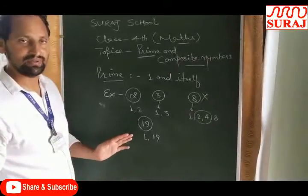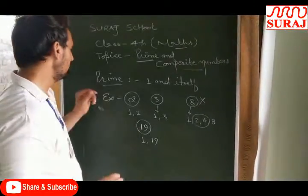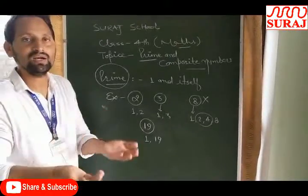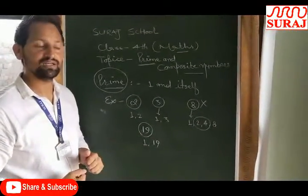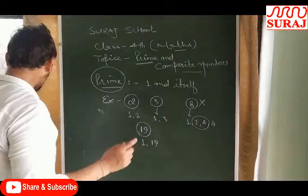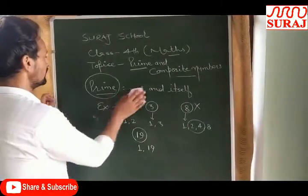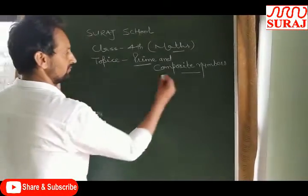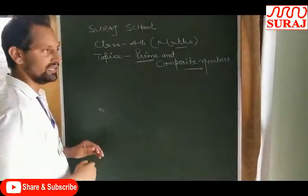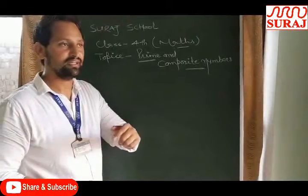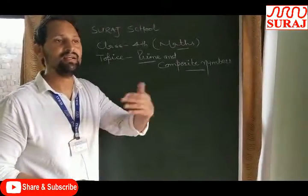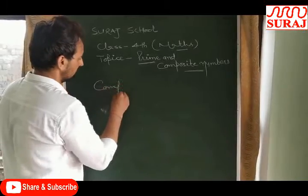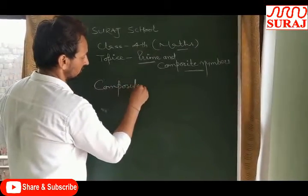If we have a prime number, then we will have a composite number. A composite number is one whose number is divided by one, itself, and other numbers as well.